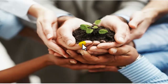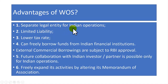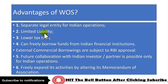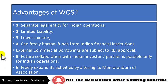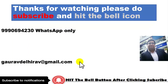What are the advantages of a wholly owned subsidiary? First, it is a separate legal entity for Indian operations, distinct from your parent company. Second, there is limited liability — the assets of the parent company are not at risk. Third, there is a lower tax rate. Fourth, you can freely borrow funds from Indian institutions, which is very beneficial. External commercial borrowings are subject to RBI approvals. Fifth, future collaboration with Indian investors and partners is possible. Sixth, you can freely expand your business activities by altering the memorandum of association at any time.